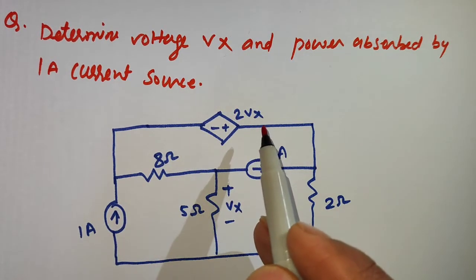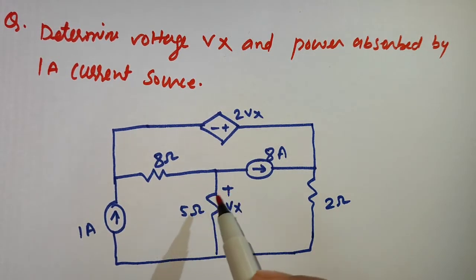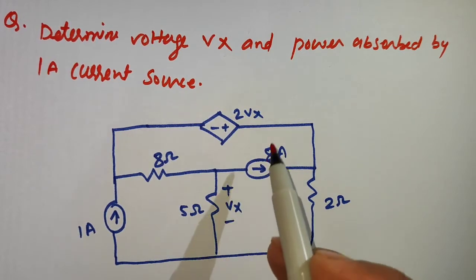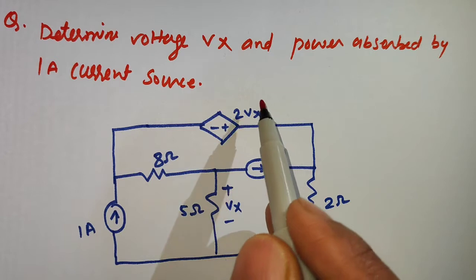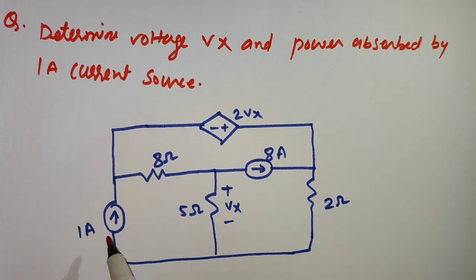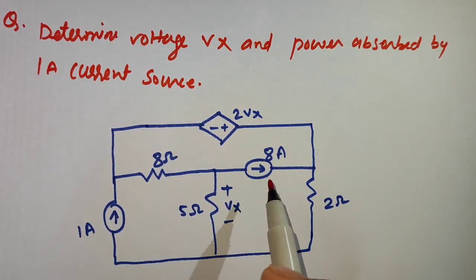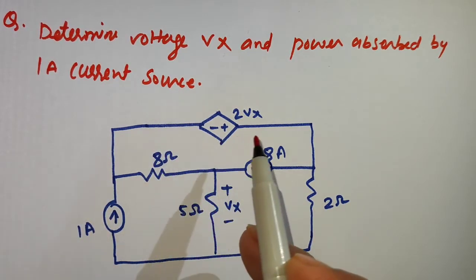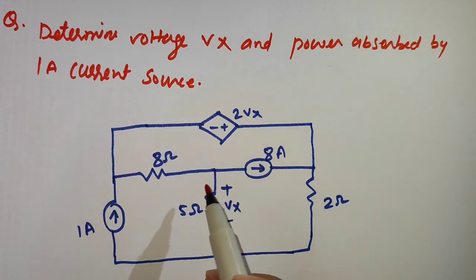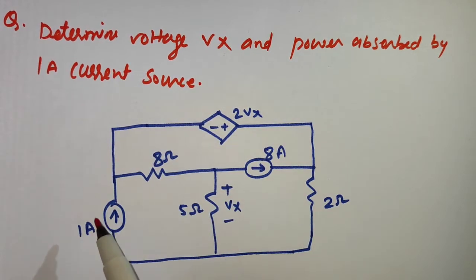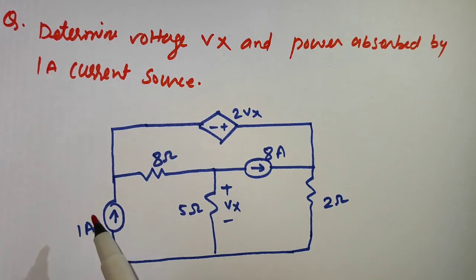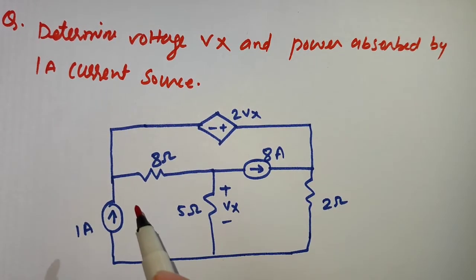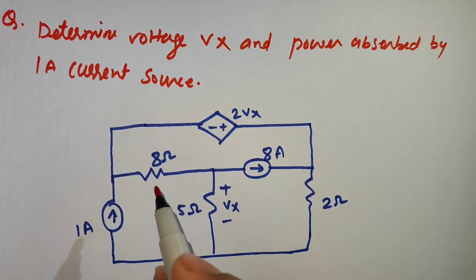In this circuit, 2Vx is a dependent source and Vx is labeled here. Due to this we are determining Vx. There is a 1 ampere current source and an 8 ampere current source. We need to determine the voltage Vx and the power absorbed by the 1 ampere current source.